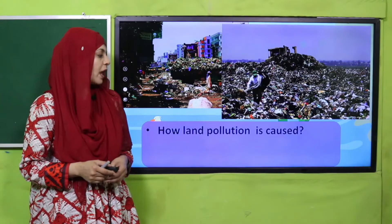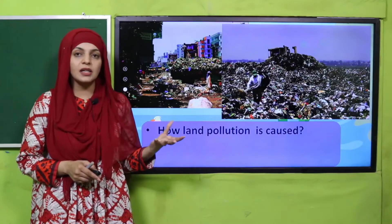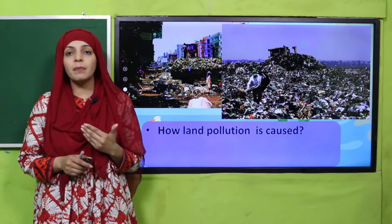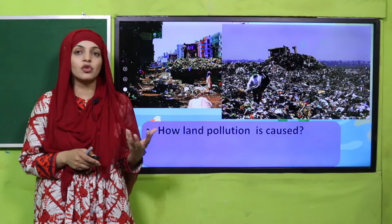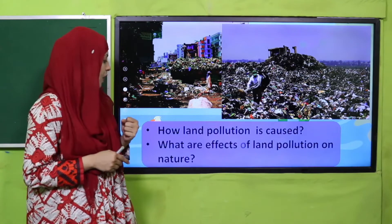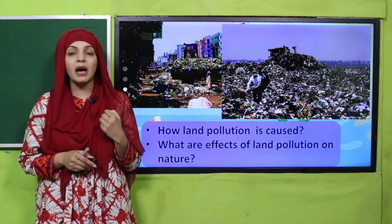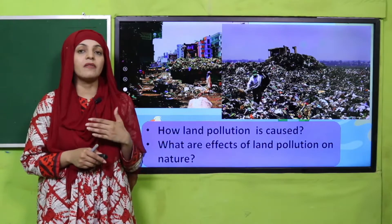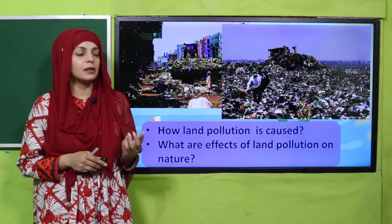Let's quickly start with an activity. Look at some pictures and tell me how land pollution is caused. Jab jaga jaga koore karkat ki dhir laga di jati hai zameen ke upar, aur isko pick up nahi kiya jata, to isse mukhtalif diseases phailti hain and harmful insects breed on it. So what are the effects of land pollution on nature? Different diseases spread, water becomes contaminated, movement problems occur, and bad smells cause illnesses.